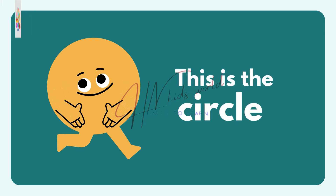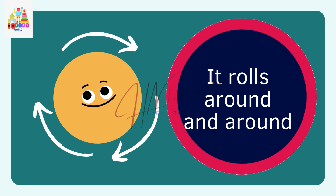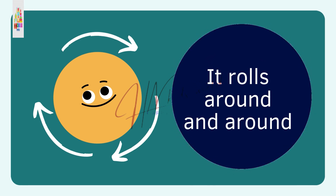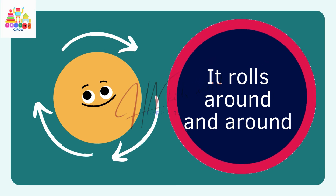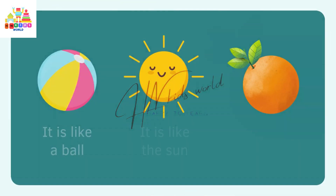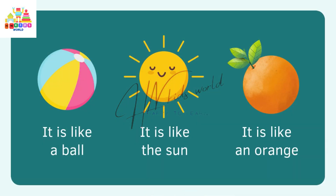This is the circle. It rolls around and round. It is like a ball, like a sun, and like an orange.